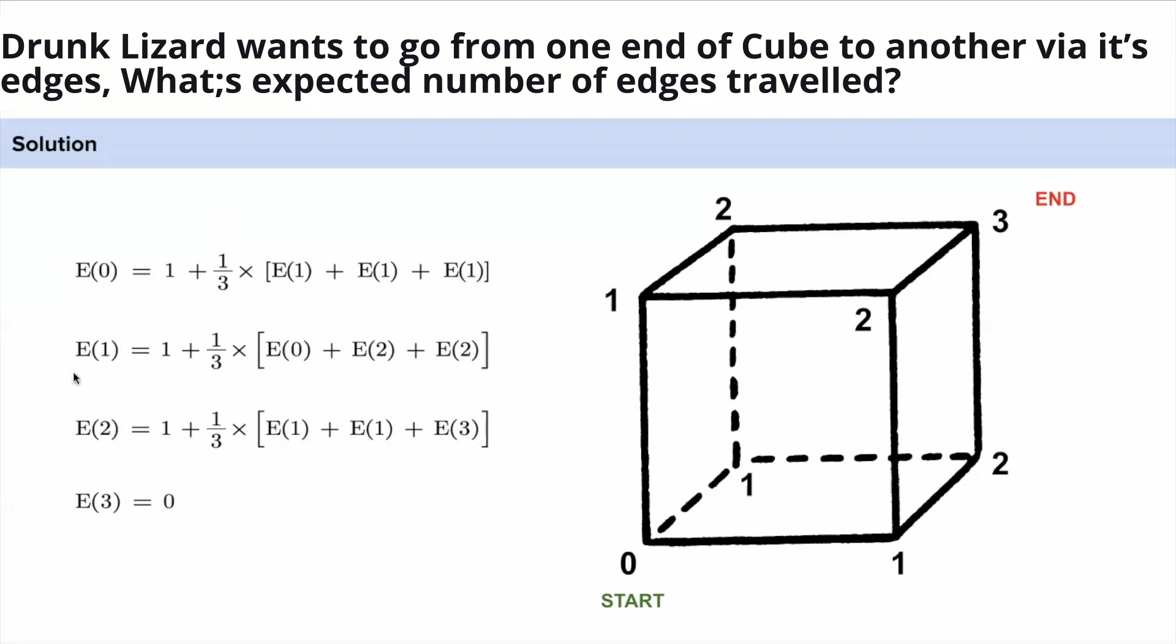Similarly what you can do is that you can write E(1). E(1) has equal probability of going to these two and this zero, that is where 1/3 E(0) + E(2) + E(2). Similarly you can write everything.